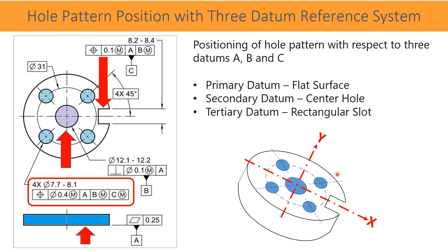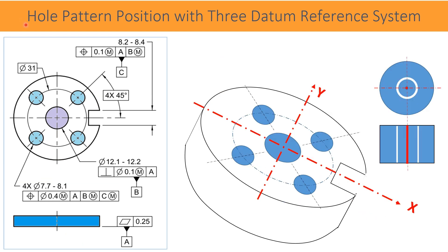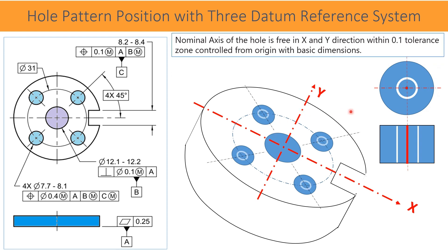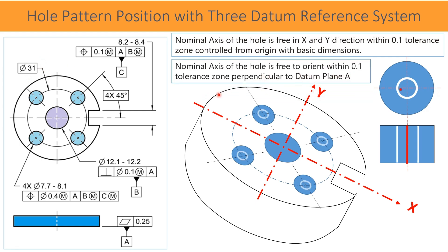As shown in the image, once the part is set in the datum reference frame with the X, Y, and Z axes, each hole is positioned within a tolerance of 0.4. This circular tolerance zone allows the nominal axis of each hole to move freely in the X and Y linear directions and rotate about the Z axis. Each hole is separately controlled from the X, Y, and Z axes using basic dimensions. Datum A controls the perpendicularity of the hole with respect to the plane.